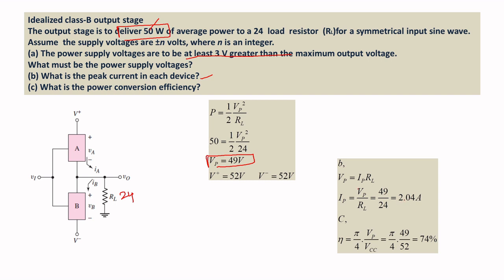The third question asks for the conversion efficiency as a percentage. The formula is η = (π/4) × (VP / VCC). Substituting the known values of peak voltage and supply voltage gives an efficiency of approximately 74 percentage.